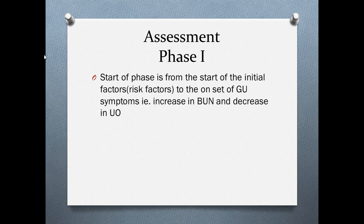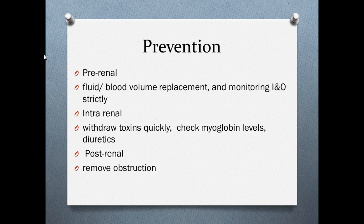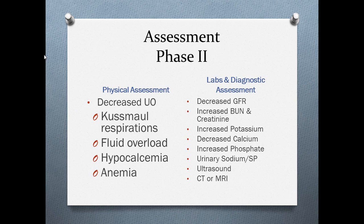Phase one starts from the initial risk factors to the onset of GU symptoms such as increased BUN or decreased urinary output. Interventions include prevention, replacement, monitoring I's and O's. For intra-renal causes, we remove the toxin quickly and check myoglobin levels — myoglobin is elevated with crush injuries, so we check it after falls or traumatic injuries to make sure kidneys aren't becoming clogged. We give diuretics to help clear the blockage from blood transfusions and crush injuries. For post-renal, we remove the obstruction.